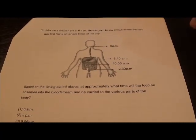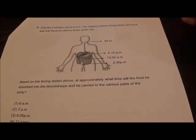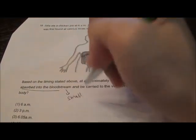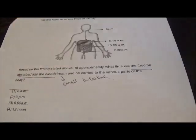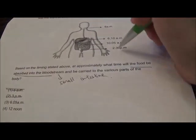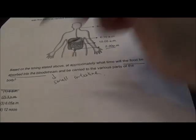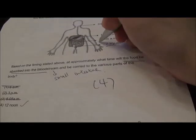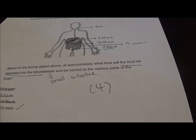Question 18: Julia ate a chicken pie at 6 am. At approximately what time would the food be absorbed into the bloodstream? Absorption happens at the small intestine. It cannot be 6 am when you first eat, cannot be 3 pm because at 2:30 the food is already at the anus, and cannot be 6:05 because you are still chewing. The only possible answer is 12 noon, when the food is in the small intestine and can be absorbed into the bloodstream. Answer is 4.